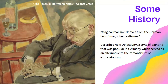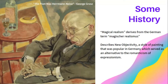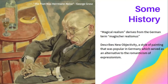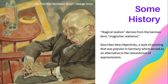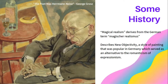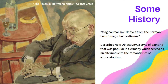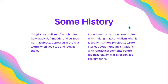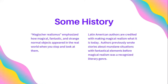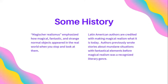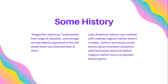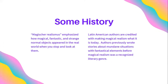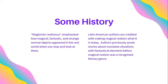This piece presents a realistic scene. A man sits in his chair with a drink and a cigarette nearby. The coloring and lack of exact perspective makes this a new objectivist piece. Magische Realismus emphasized how magical, fantastic, and strange normal objects appeared in the real world when you stop and look at them, which I think is quite charming.